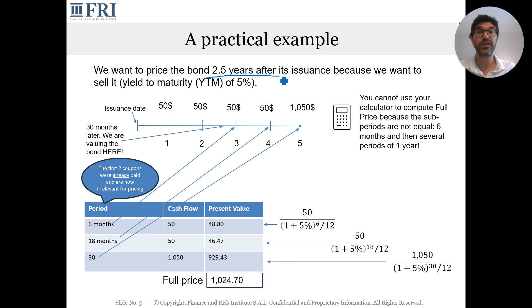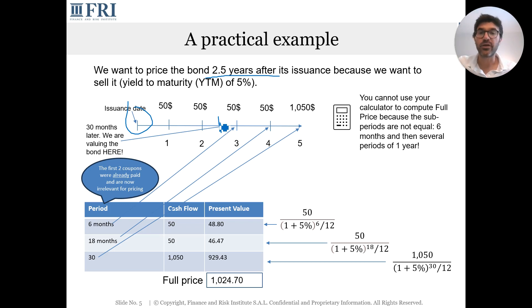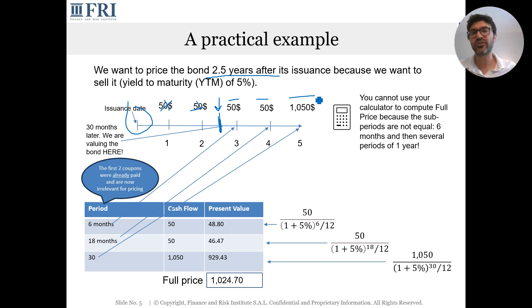Let's take a practical example. We want to price the bond 2.5 years after issuance — imagine you bought it at issuance, held it for 2.5 years, and now want to sell. To calculate the full (dirty) price, the golden rule is to discount all future cash flows. At year 2.5, the first two coupons are already paid and irrelevant; whoever buys the bond now only receives the remaining future cash flows.